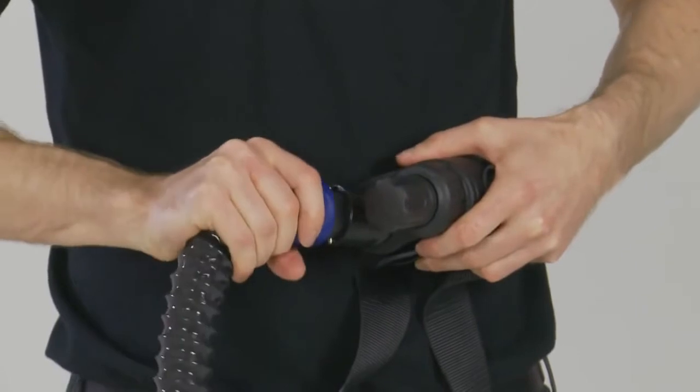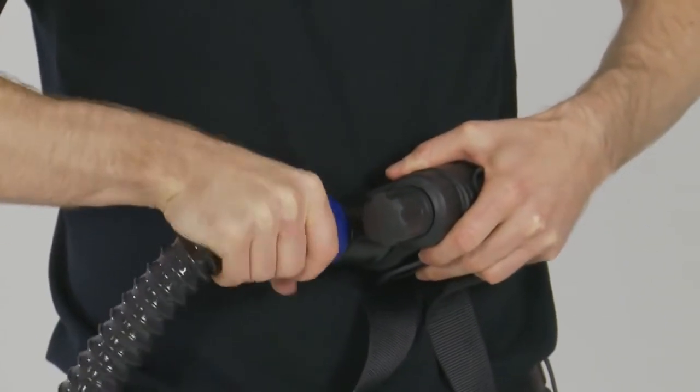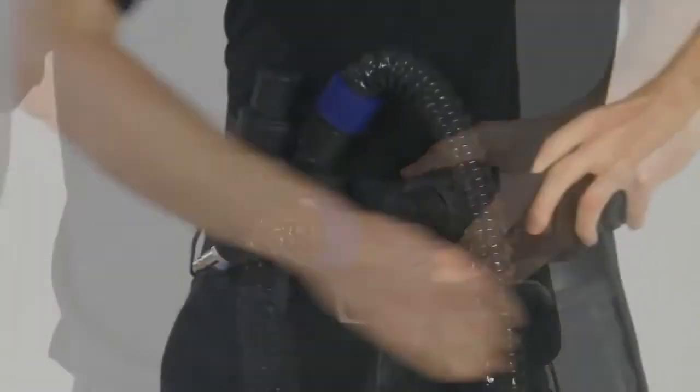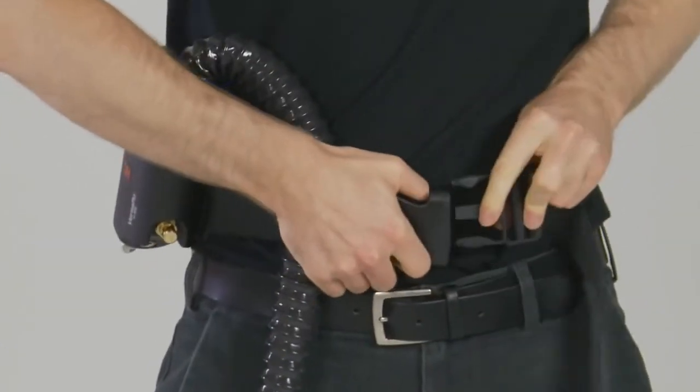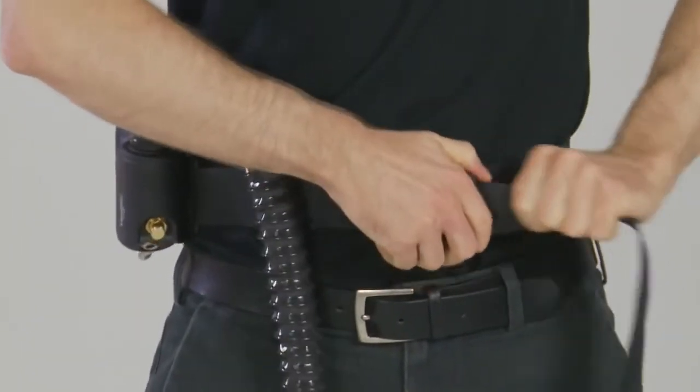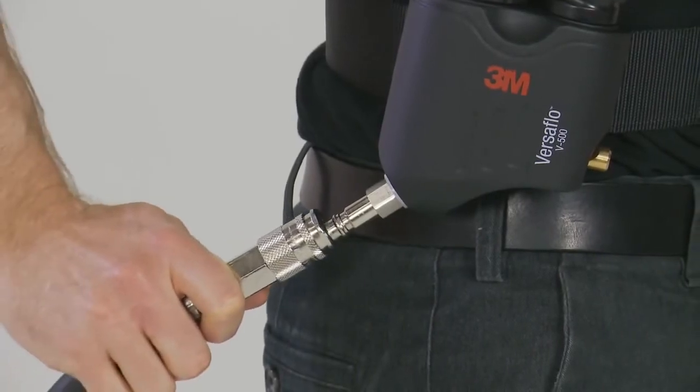Connect the breathing tube to the outlet of the regulator and ensure it is securely fitted. Put the regulator on the waist and adjust the belt to ensure a comfortable fit. Connect the cast to the regulator.